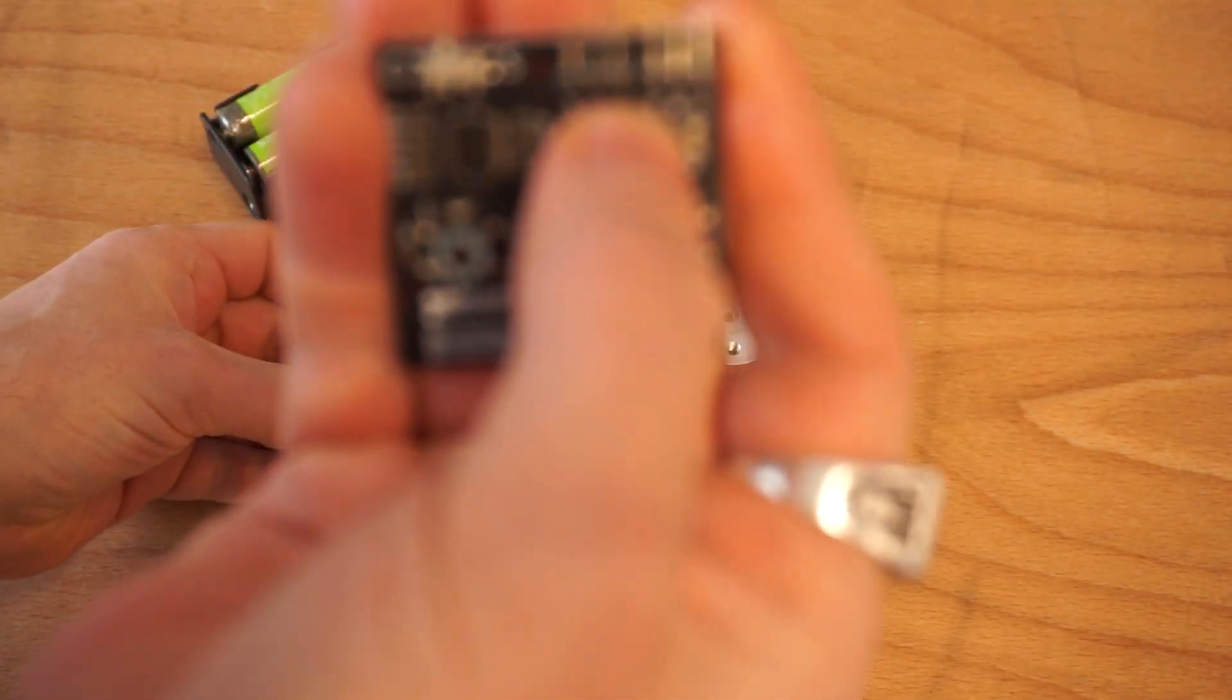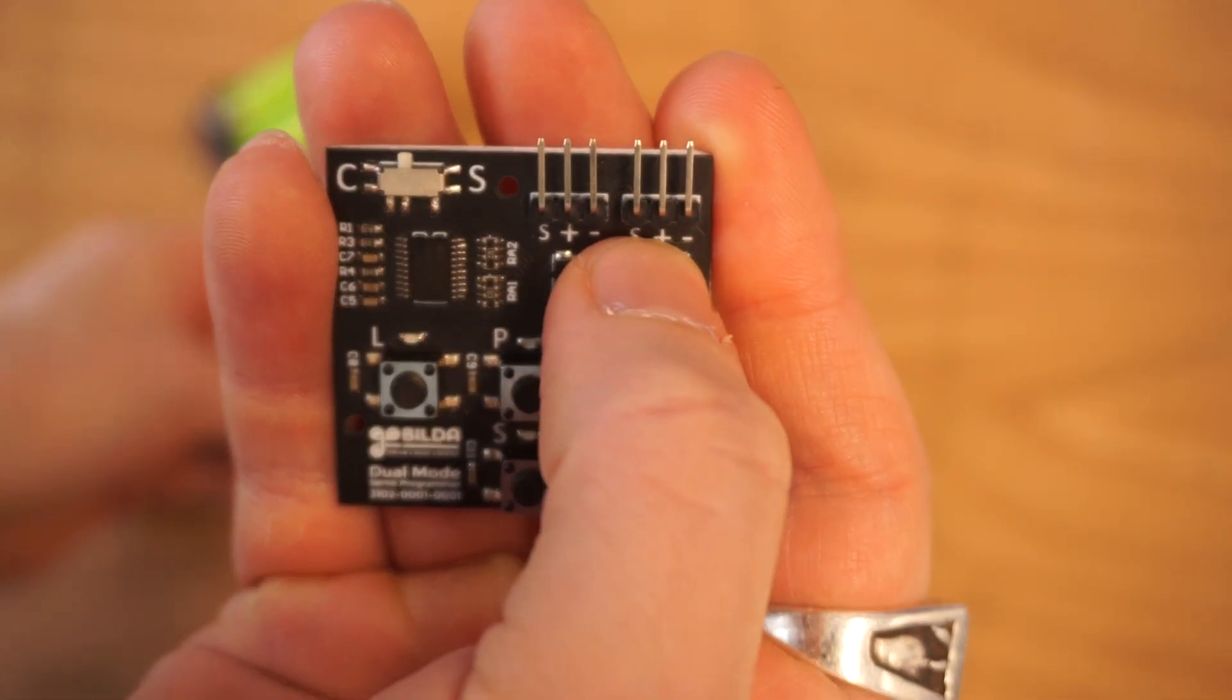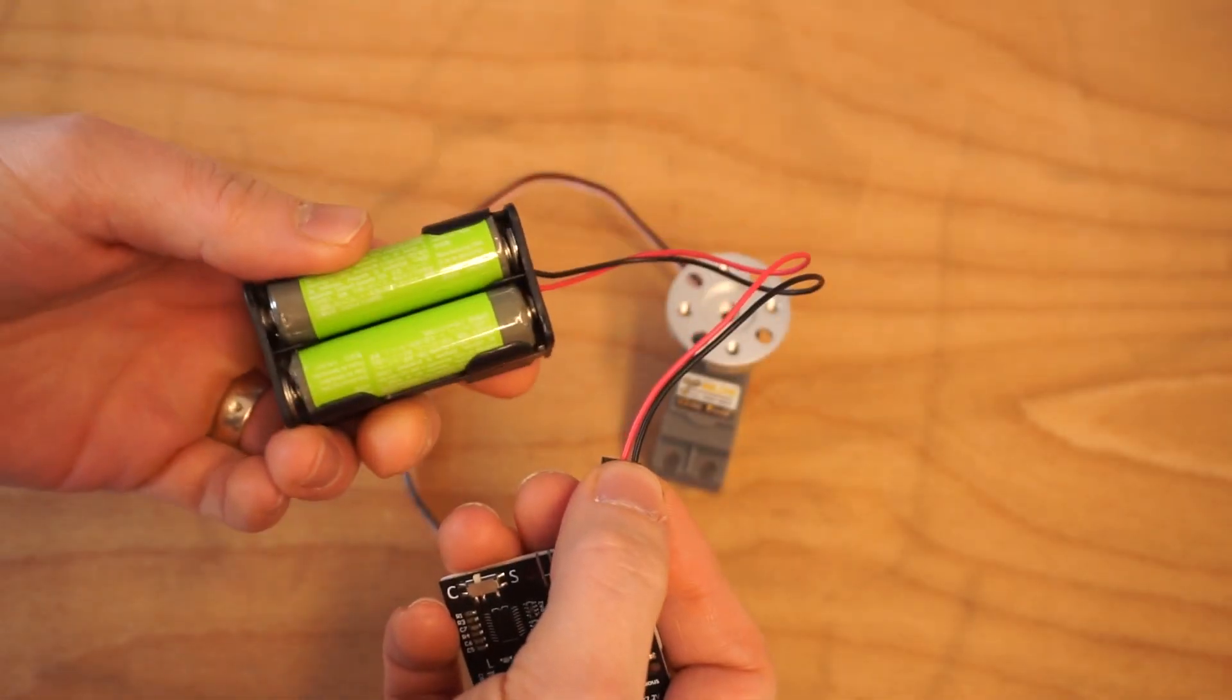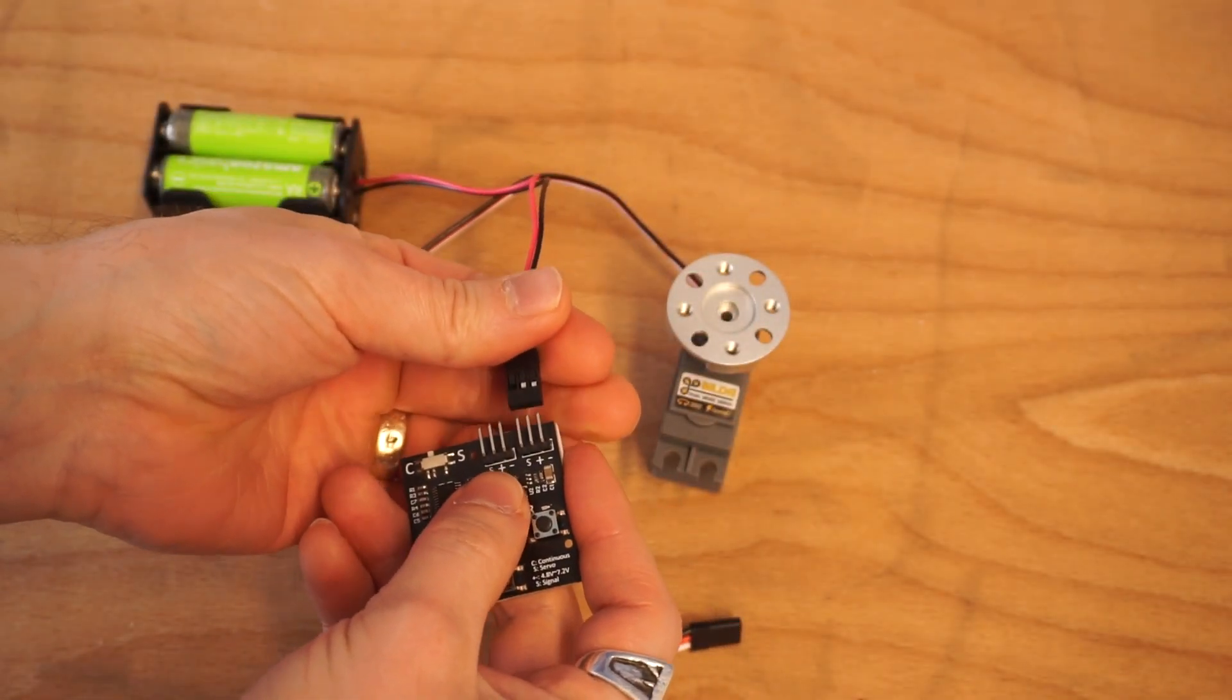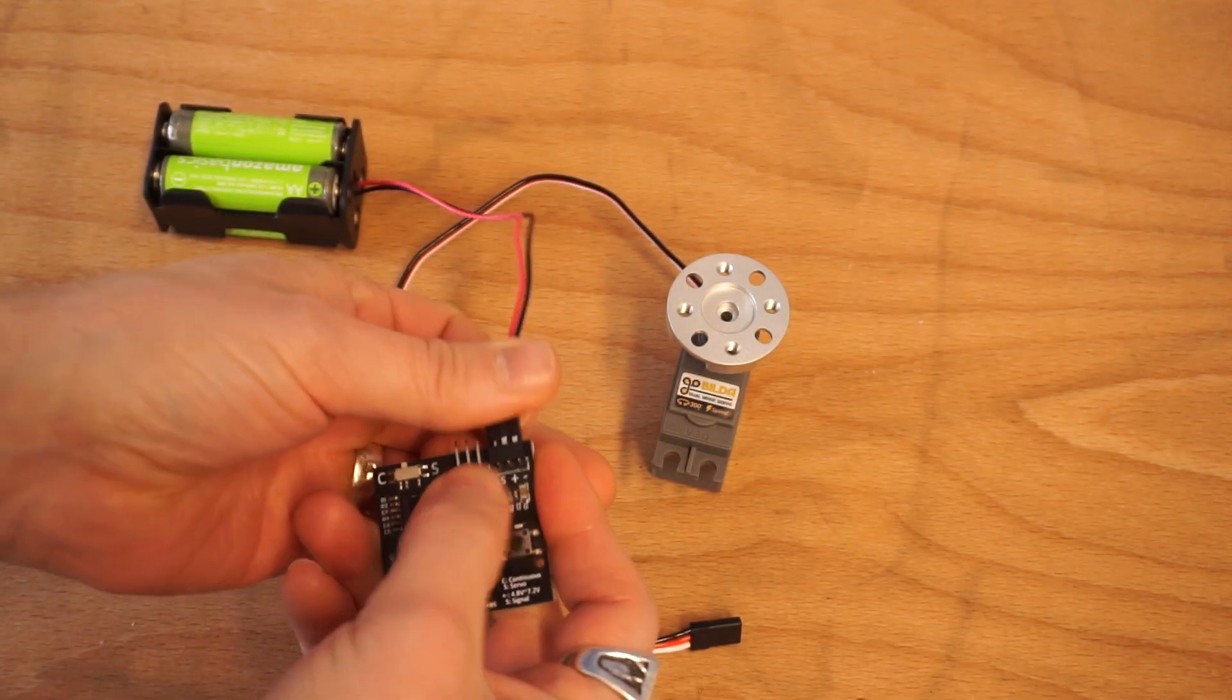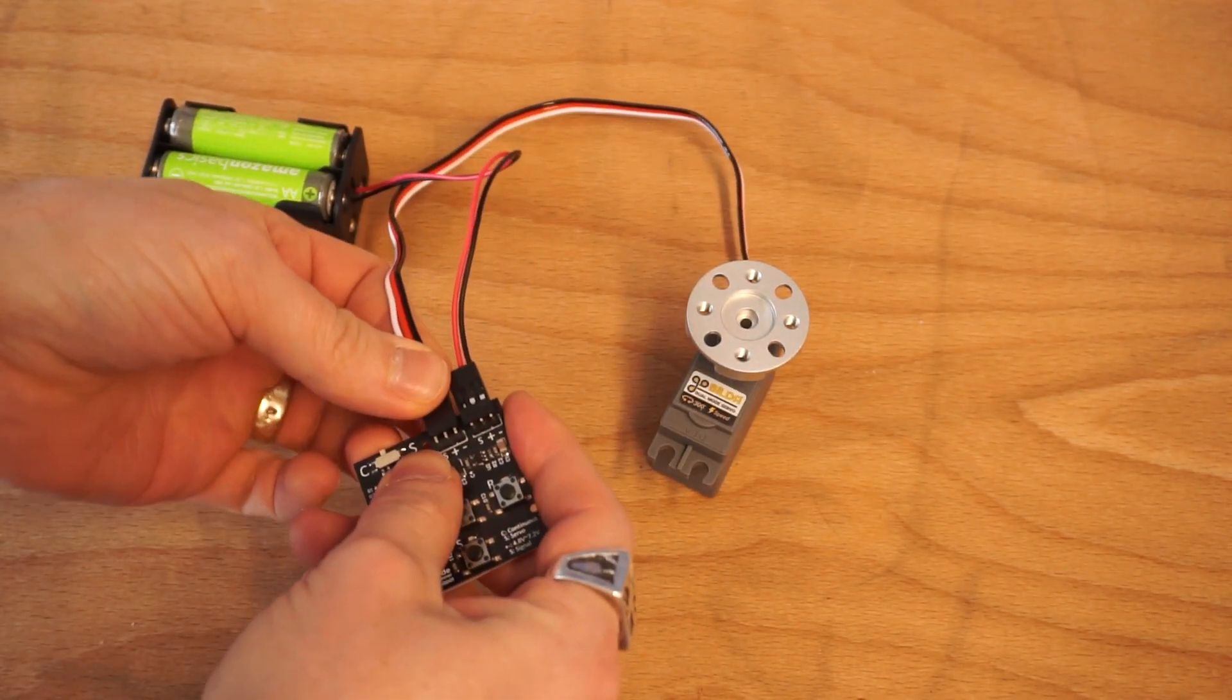Grab your power on your servo board. You'll notice up here you have a little S, power, ground. Any 5 volt power supply will work. This is 6 volt here. Plug in your power on one side. Plug in your servo on the other side.